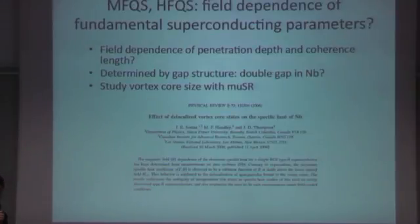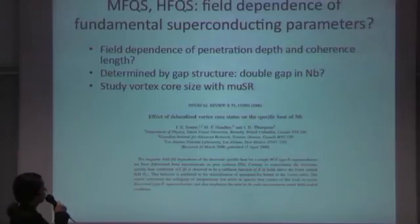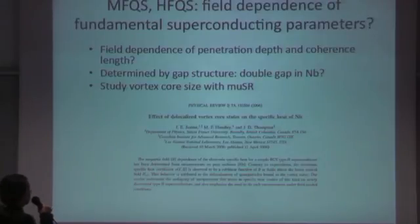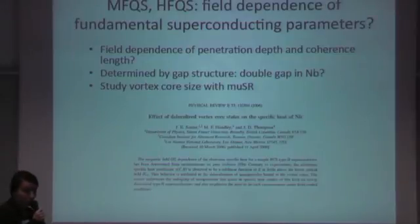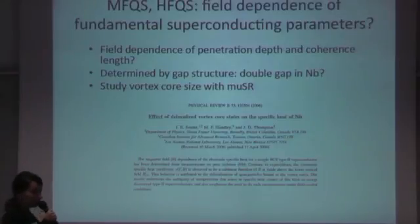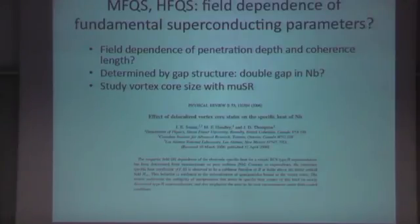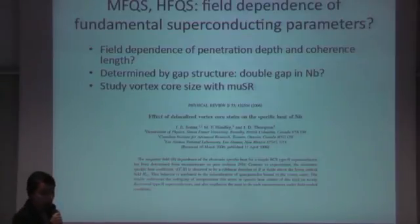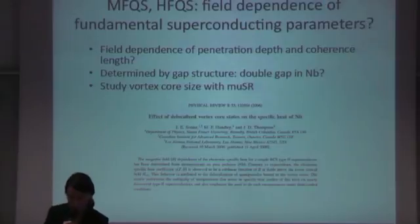This was the part about proving or disproving existing ideas. Now for some new ideas: for medium-field and high-field Q-slope, is it possible there is a field dependence of fundamental superconducting parameters such as penetration depth and coherence length? This has been observed in many unconventional superconductors and is determined by the gap structure. We want to investigate the possibility of a double gap in niobium, and we will do this by studying the vortex core size with µSR. There is a paper from Jeff Sonier — a professor at SFU we collaborate with — on delocalized vortex core states, where specific heat measurements suggest the possibility of a double gap in niobium. Thank you.